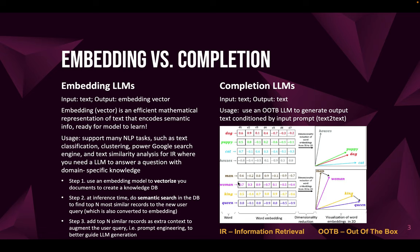For knowledge search, you follow three steps. In the first step, you use an embedding model to vectorize your documents to create a knowledge database. In the second step, at inference time, you do semantic search in that database to find the top-N most similar records to the new user query, which is also converted into an embedding vector. In the third step, you add the top-N records as additional context to augment and enrich your user query — this is called prompt engineering, to better guide the large model's generation of the output response.